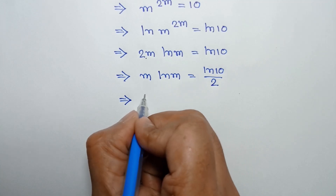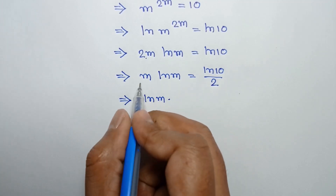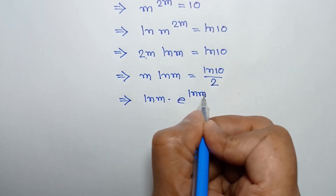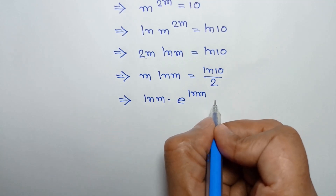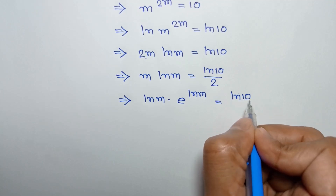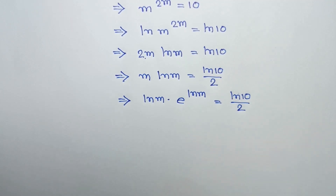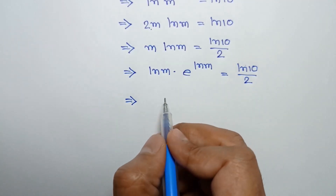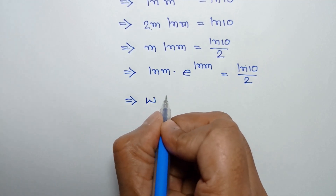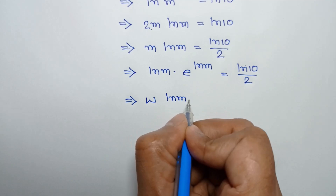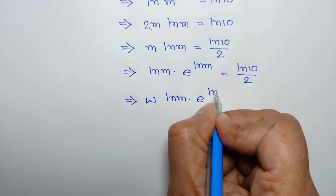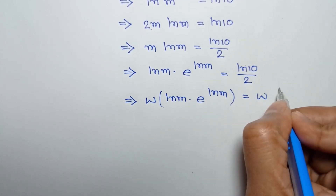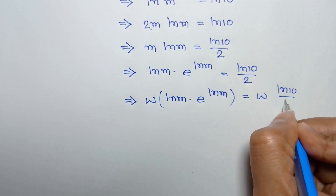This ln of m times m can be written as e to the power ln of m, times ln of m, which equals ln of 10 over 2. Now, taking the Lambert W function to both sides, we can write W of ln of m times e to the power ln of m is equal to W of ln of 10 over 2.